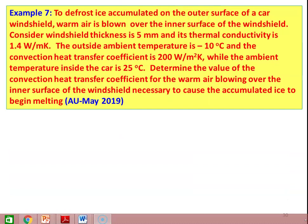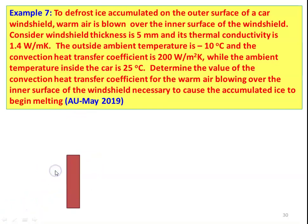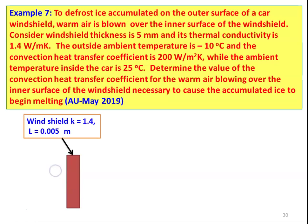Example number 7: To defrost ice accumulated on the outer surface of a car windshield, warm air is blown over the inner surface. Windshield thickness is 5 mm (0.005 m) and thermal conductivity is 1.4 W/m·K. Outside ambient temperature is −10°C with convection heat transfer coefficient 200 W/m²·K. Ambient temperature inside the car is 24°C. Determine the value of the convection heat transfer coefficient for the warm air blown over the inner surface necessary to cause the accumulated ice to begin melting.